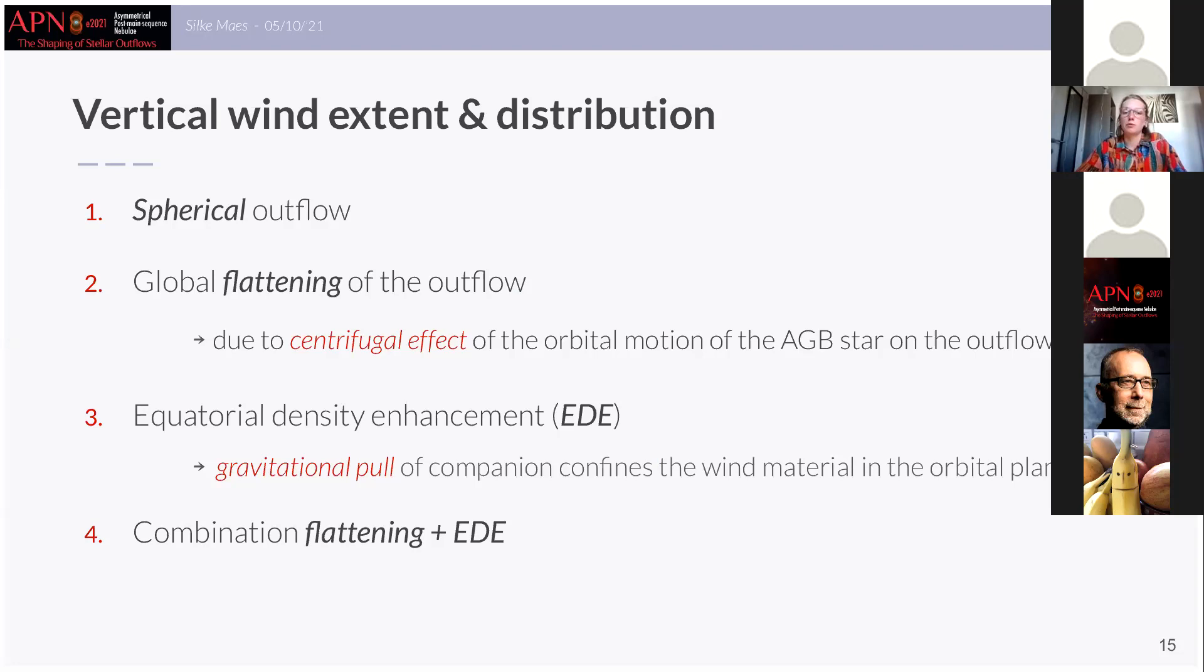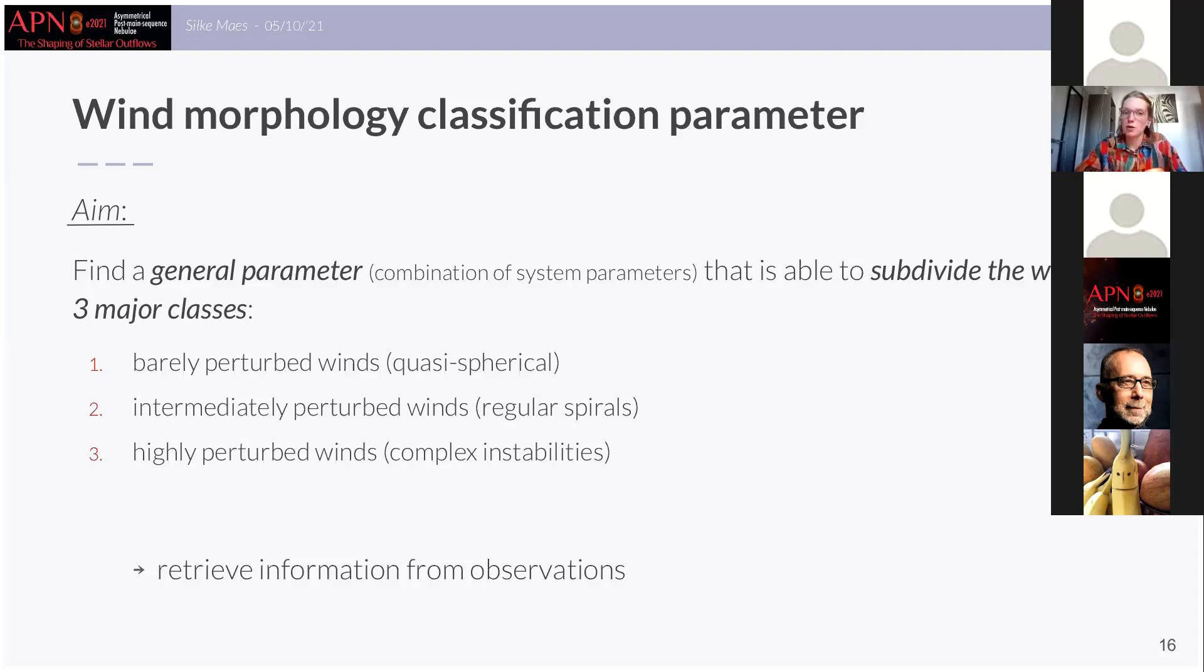Okay let's move on to the classification parameter. So now we found these different observed morphologies and they are different in the orbital plane and the meridional plane and now we aim to classify these morphologies by some way by using a singular parameter which is a combination of the system parameters. So based on the morphologies that we found in the simulations we can actually divide our models in three major classes: mainly spherical outflows, outflows that are showing regular spirals, and lastly we also find highly perturbed spirals.